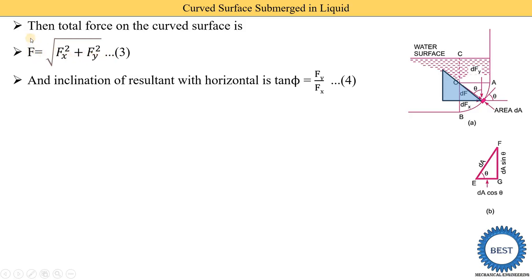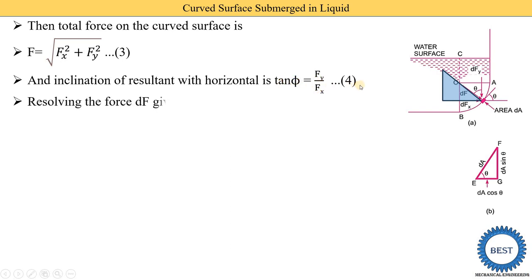From F² = Fx² + Fy², we remove the square to get F = √(Fx² + Fy²). Second, the inclination of the resultant with the horizontal is given by tan φ = Fy / Fx. In numerical problems on curved surfaces, we are asked to find both the resultant force and the angle of the resultant force φ — equation number 4.